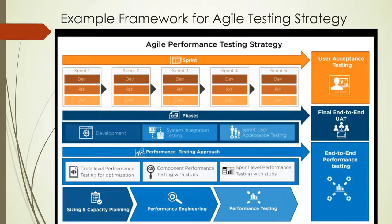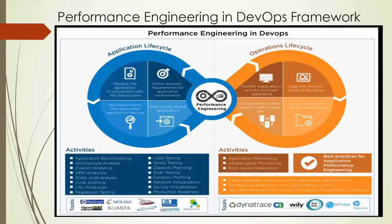We then saw how agile fits in the performance framework nowadays — how when we are doing performance testing, we do it in agile. At every sprint we are given some specific requirements, and at the end we do end-to-end performance testing for the entire application. Then we saw how DevOps comes into the picture in performance.